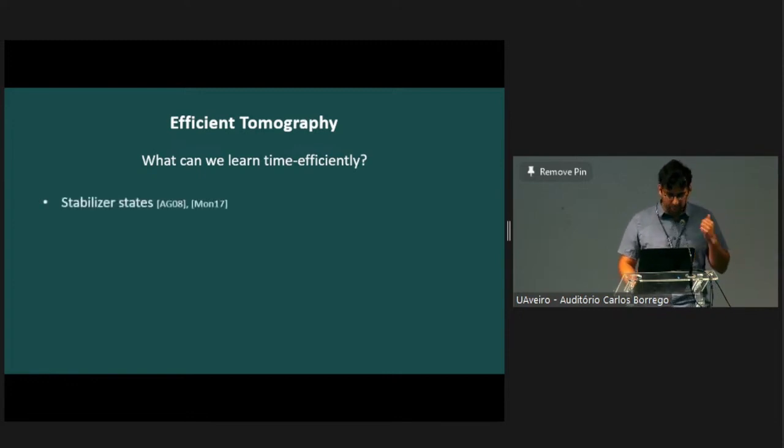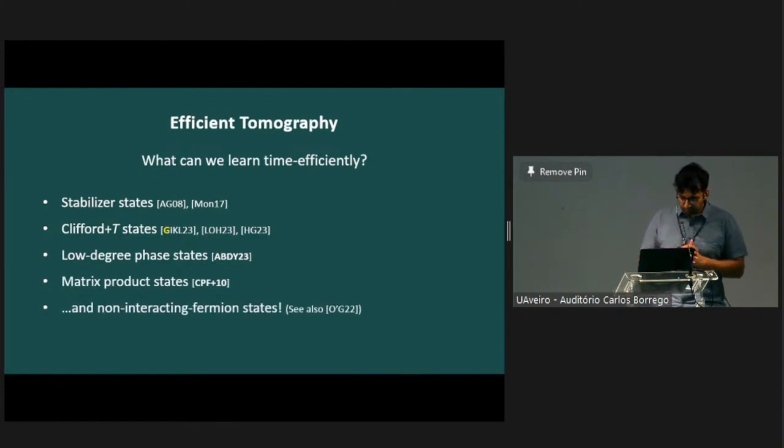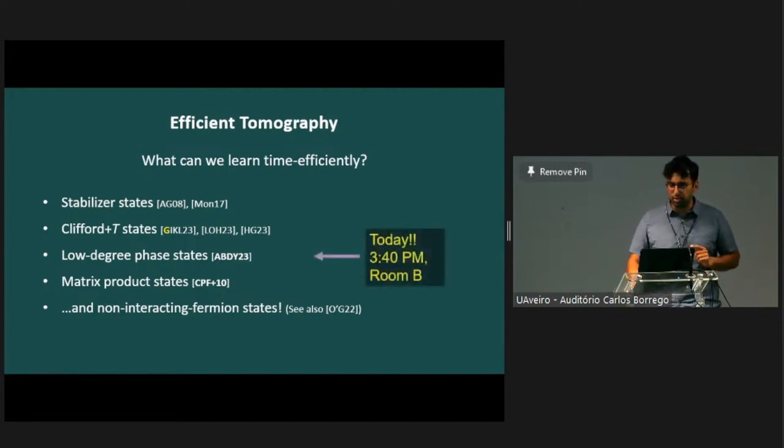The thing we want to dig into in this talk is which learning tasks permit time-efficient algorithms. In particular, we still want to reconstruct the entire state, but we want our algorithm to run efficiently. We've learned in the last few years that there are a number of classes of quantum states that permit efficient learning algorithms. Among these are stabilizer states. Just maybe like two months ago, the stabilizer state learning algorithms were generalized to any quantum state that can be prepared by Clifford Gates and a logarithmic number of non-Clifford Gates. This is also true for certain phase states, for matrix product states. And the point of this talk is that non-interacting fermion states can also be learned time-efficiently.